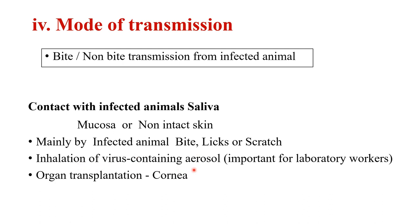Another route is inhalation of virus-containing aerosol, more important for laboratory workers — bat rabies is transmitted this way. Organ transplantation such as cornea is another route; corneal transplantation is contraindicated from patients who died of rabies or unconfirmed neurological conditions. A reported case described a patient developing rabies after corneal transplantation; investigation revealed the donor had a dog bite five years prior but never developed symptoms, because the incubation period of rabies can be very long.